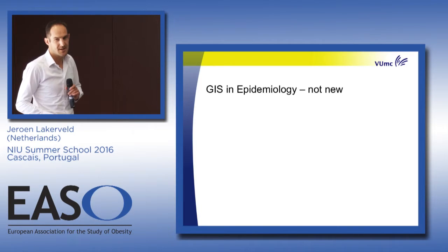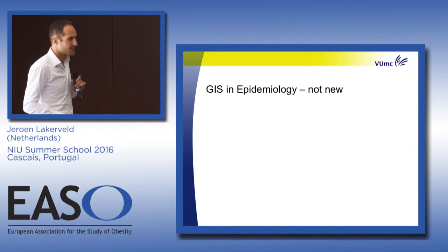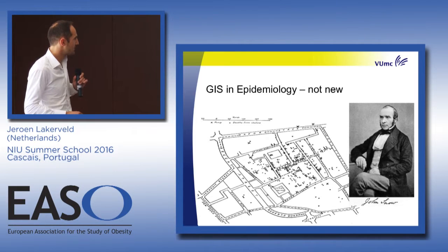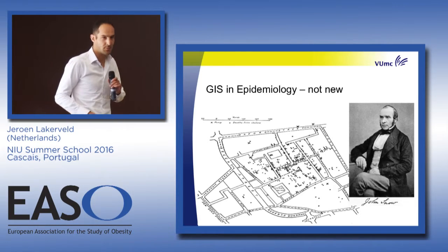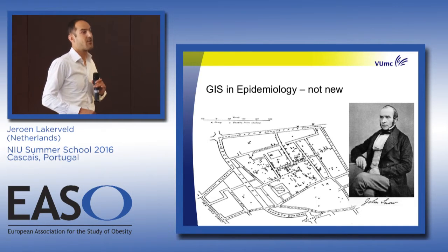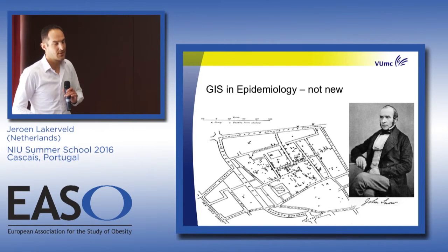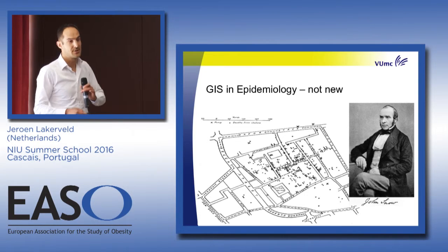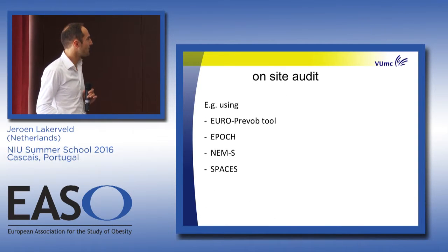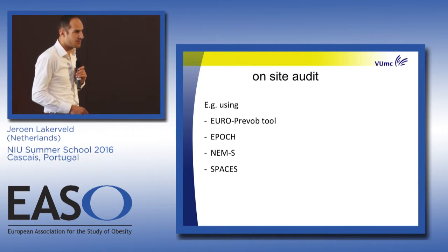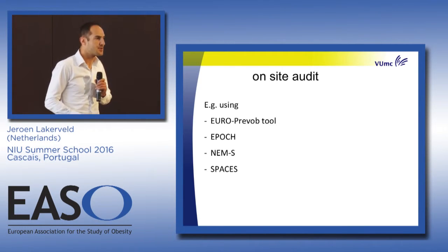GIS and epidemiology is not new — everyone knows John Snow's example from around 1854, where he plotted cholera cases in Soho and saw they were clustered around a water pump. That was a nice example of environmental epidemiology with cholera, and now we are doing it with behaviors, obesity, and diabetes risk.